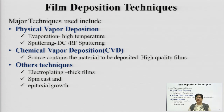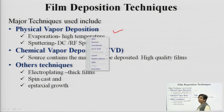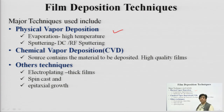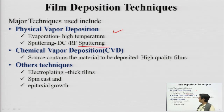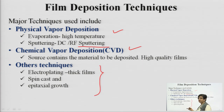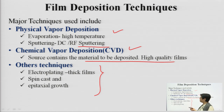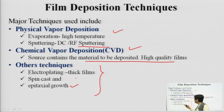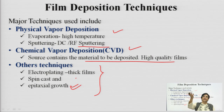The major techniques of film deposition include: first, physical vapor deposition (PVD), involving thermal evaporation of the material and deposition of those species onto the surface; then RF sputtering; chemical vapor deposition; and other techniques such as electroplating, spin casting, and epitaxial growth. Epitaxial growth, where the same layer is replicated on top, has already been studied.